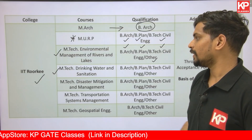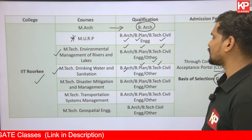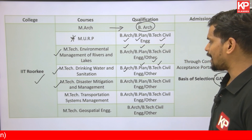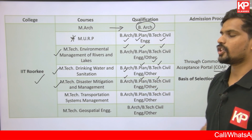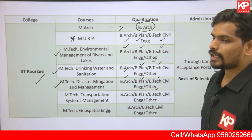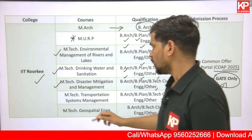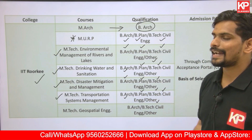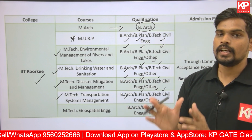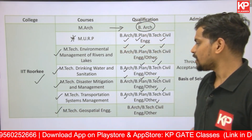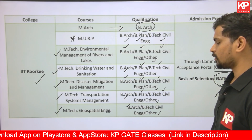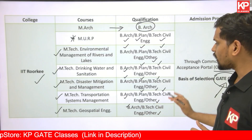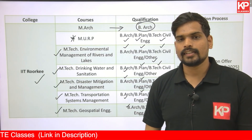M.Tech in Drinking Water and Sanitation at IIT Roorkee is open to B.Arch, B.Plan, and B.Tech Civil Engineering graduates along with other engineering graduates. M.Tech in Disaster Mitigation and Management is similarly open to B.Arch, B.Plan, and B.Tech Civil Engineering and other engineering graduates, with GATE Architecture among the accepted papers. M.Tech in Transportation Systems Management and M.Tech in Geospatial Engineering also accept B.Arch and B.Plan graduates with GATE Architecture or other specified GATE papers.